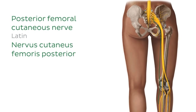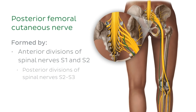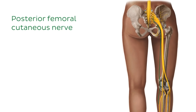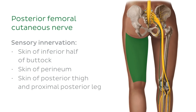The last nerve of the sacral plexus is the posterior femoral cutaneous nerve, which is formed by the anterior divisions of spinal nerves S1 and S2 and the posterior divisions of spinal nerves S2 and S3. The posterior femoral cutaneous nerve leaves the pelvis via the greater sciatic foramen and courses down the posterior aspect of the thigh. It provides sensory innervation to the skin of the inferior half of the buttock, the skin of the perineum, the skin of the posterior thigh, and the proximal posterior leg. Interestingly, it supplies the greatest surface area out of all the cutaneous nerves.